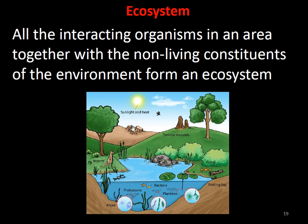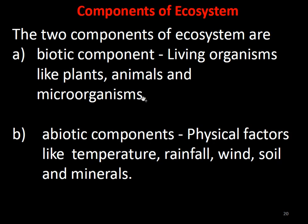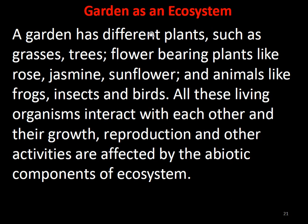An ecosystem comprises both living and non-living components. All the interacting organisms in an area together with living and non-living factors constitutes the ecosystem. There are two components: biotic components — that is living components like plants, animals, and microorganisms — and abiotic components — that is physical factors like temperature, rainfall, rivers, winds, and minerals.